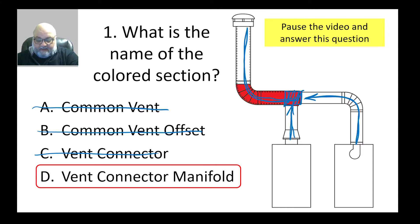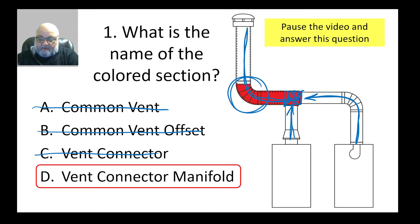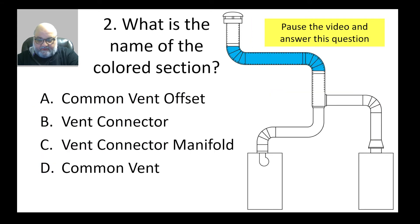That leaves us with the only correct answer: vent connector manifold. I could also tell because there is only one elbow in the main vent — just one elbow — which is a definitive indication that this is not an offset but a manifold.